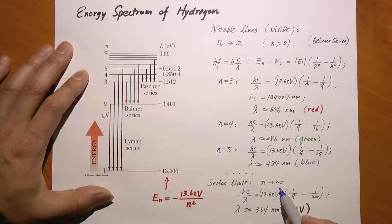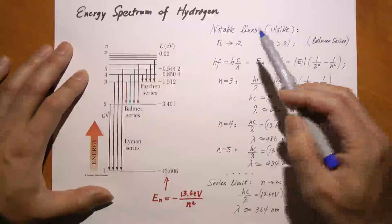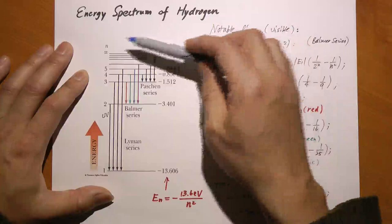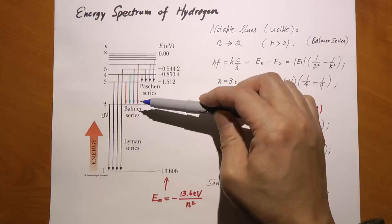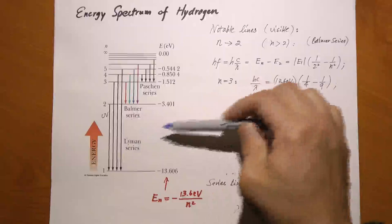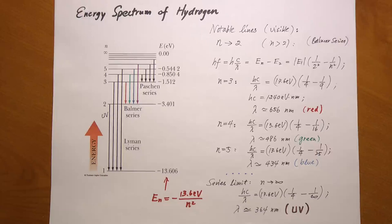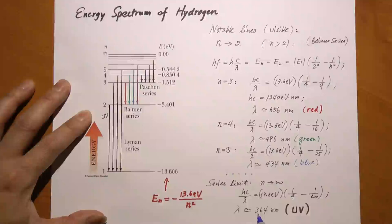We can also calculate the series limit, corresponding to the shortest wavelength in the Balmer series—the highest energy photon, released when an electron goes from n=∞ to n=2. This happens when a nucleus captures an electron from far away that settles at the n=2 orbital. Plugging n=∞ into the formula gives 364 nm, which is outside the visible light range—it's ultraviolet. So the Balmer series includes both visible light and UV.